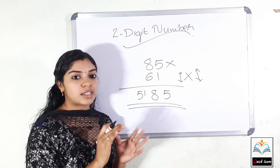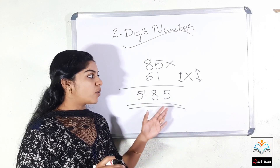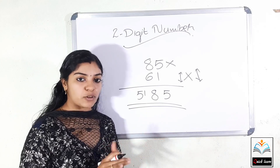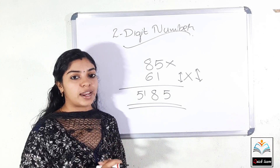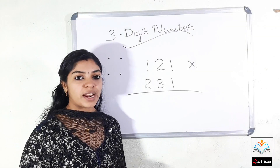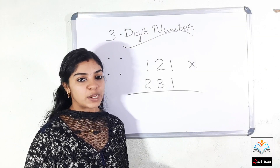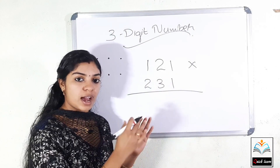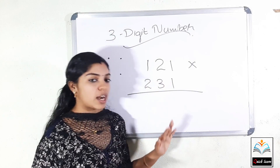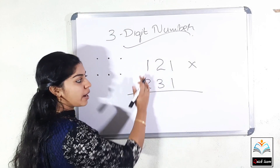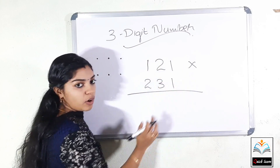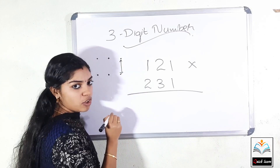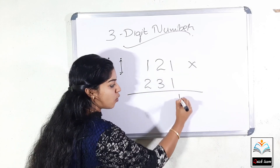Now, if you study the base method, you will follow up and also use this trick. We will calculate the two-digit number, then the three-digit number. Now we have to multiply the two-digit number. Let's multiply the two-digit number — we are doing the same number. We will multiply the two numbers and cross the numbers.